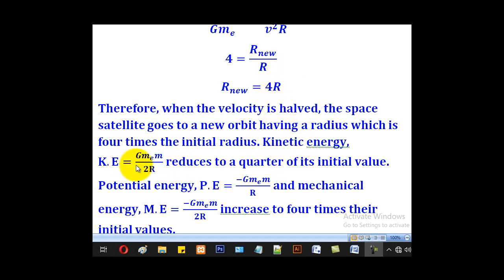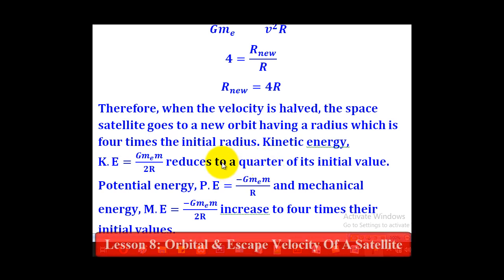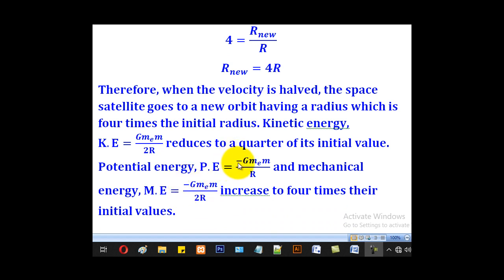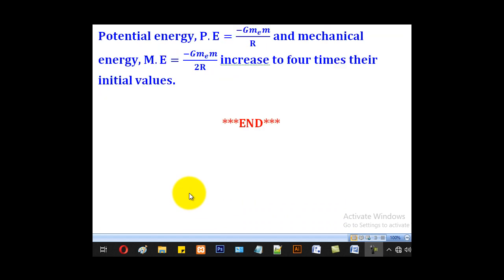Because the new orbital radius is 4r, the kinetic energy (proportional to 1/r) reduces to a quarter of its initial value. For potential energy and mechanical energy, which include a negative sign and are proportional to -1/r, the values increase four times their initial values — the increase is due to the negative sign. That brings us to the end of our lesson. Thank you for watching, and please subscribe to my channel, Roa Learning Platform.